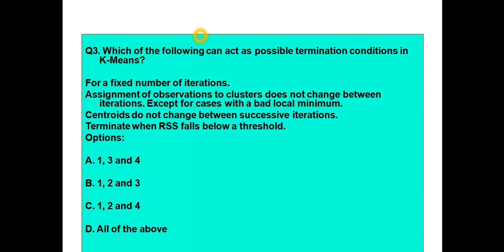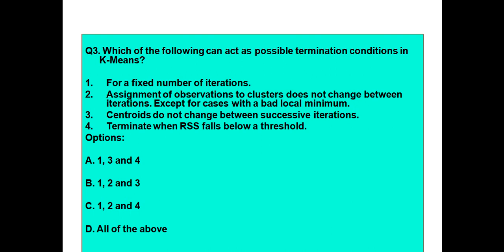The next question is: which of the following can act as possible termination conditions in k-means? One: a fixed number of iterations. Two: assignment of observations to clusters does not change between iterations, except for cases with a bad local minimum. Three: centroids do not change between successive iterations. Four: terminate when RSS falls below a threshold. Option A is one, three and four. Option B is one, two and three. Option C is one, two and four. Option D is all of the above. Please analyze the question carefully as it may be a little difficult.